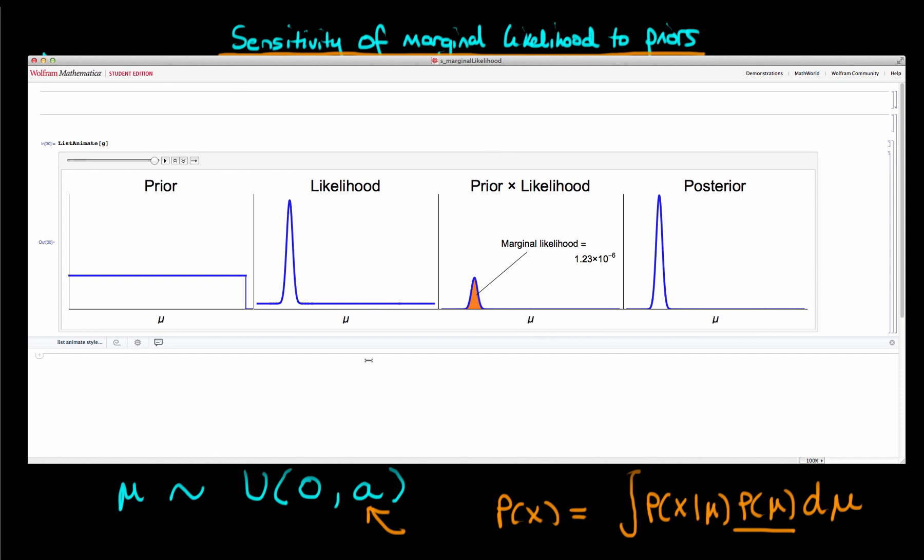So here, changing your priors doesn't really change your posterior, but because the marginal likelihood is given by the prior, or the area under the graph of the prior times the likelihood, or the volume if you're talking about a two-dimensional parameter space, or a hyper-volume if you're talking about higher-dimensional parameter spaces, then the marginal likelihood still does change significantly as you change your priors. And to me, that's one of the reasons why I don't like using marginal likelihood to do model comparison.